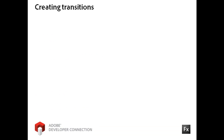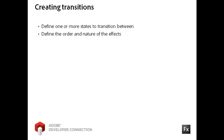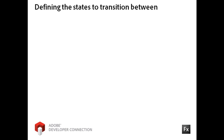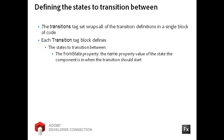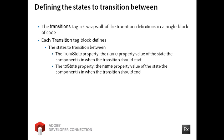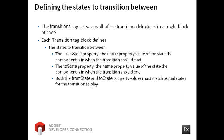To create a transition, you define one or more states to transition between. You also define the order and nature of the effects. The effects must define the components that they target. All of your transitions should be defined in the transitions property of the component. This is a single block of code that contains an array of transition definitions. Each transition is defined with a transition instance, which declares the states to transition between using the from state and to state properties. Note that both the from state and to state property values must match for the transition to play.